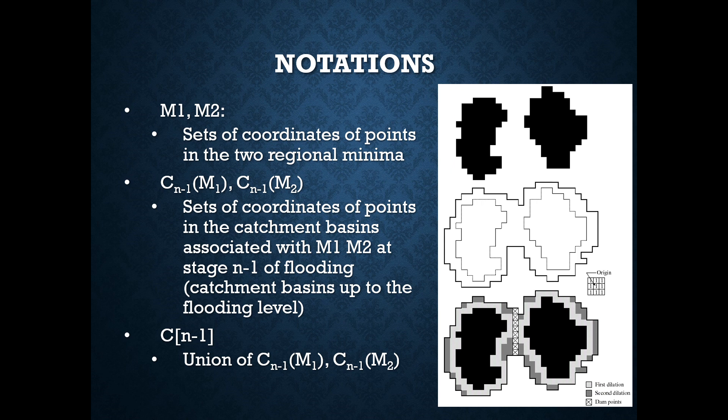We need to know about some notations. Capital M1 and capital M2 are sets of coordinates of points in the two region minimum. C of M1 and C of M2 are the sets of coordinates of points in the catchment basins associated with M1 and M2 at this stage.